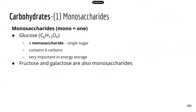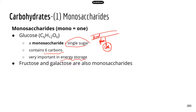Monosaccharides — common ones include glucose and fructose — are just one single sugar subunit. They contain six carbons. Glucose is very important in energy storage. The cell needs glucose as an energy source, so a cell has to be able to take in glucose from the blood. The process of taking glucose into the cell is regulated by insulin.